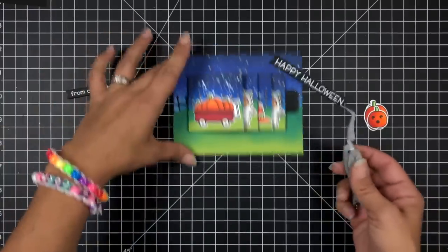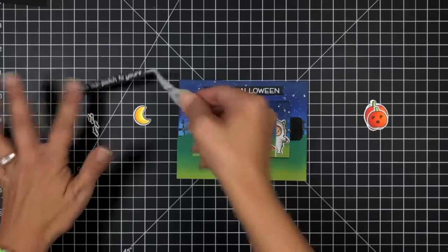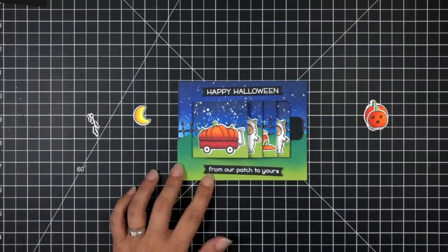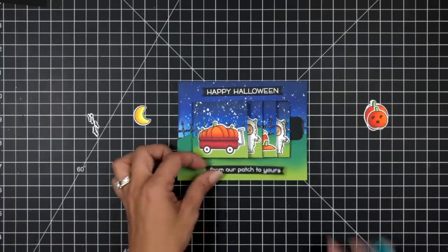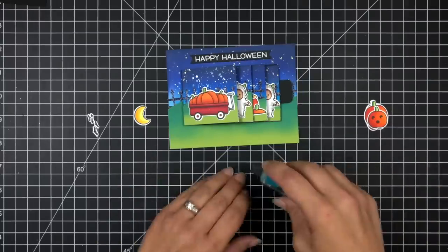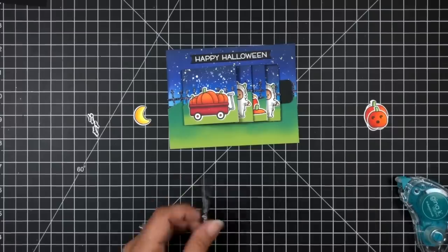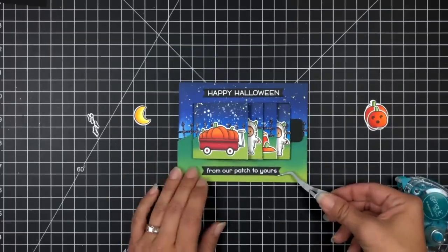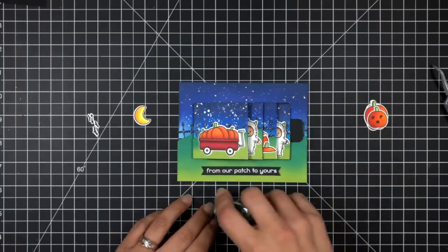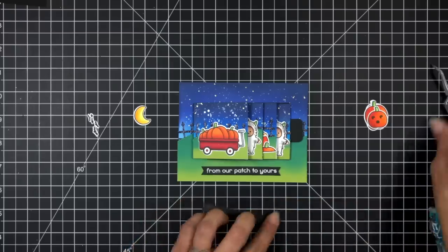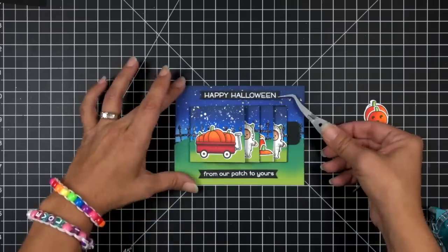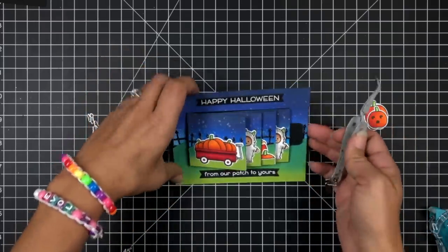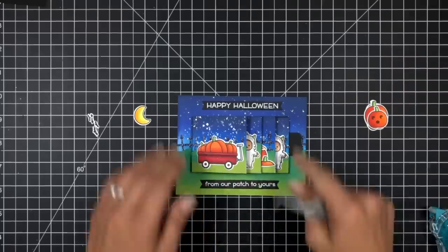So off screen I did go ahead and stamp out my sentiments. I did this on the black licorice cardstock and heat embossed with white embossing powder. Both of these sentiments come from the spooky village stamp set and then I die cut them out with the everyday sentiment banner die. I'm just taking a tape runner and adding a sentiment to the top that says happy Halloween and from our patch to yours at the bottom. I love the black stands out really well against my spooky sky background.